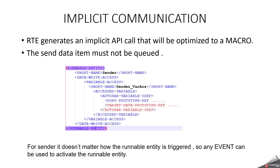In the implicit communication case, we will have a data write access, but in explicit communication we have data send points. This implicit call will also be optimized to a macro. For a sender, the same case — it doesn't matter how the runnable entity is triggered, so any event can be used to activate the runnable entity. One important thing to keep in mind: the data item must not be queued in implicit communication.